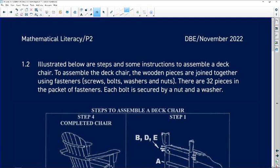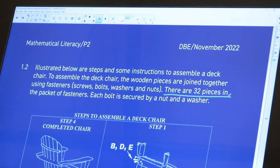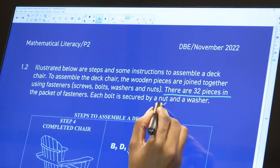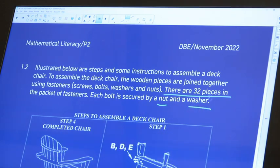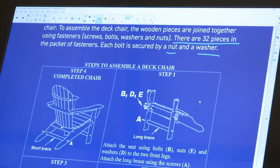To assemble the deck chair, the wooden pieces are joined together using fasteners. So the fasteners are screws, bolts, washers, and nuts. They are 32 pieces, so we've been given the total number of pieces that are in this set. In the packet of fasteners, each bolt is secured by a nut and a washer.